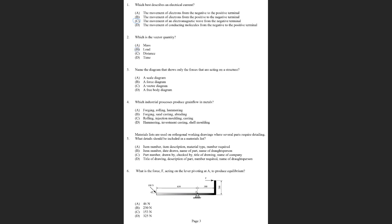Question 3. Name the diagram that shows only the forces that are acting on a structure. These diagrams are called free body diagrams. It's the diagram that shows the forces acting without any peripheral information. You don't show the house, you just show the forces that are acting. So D is the answer.